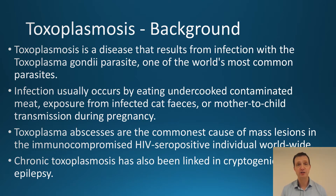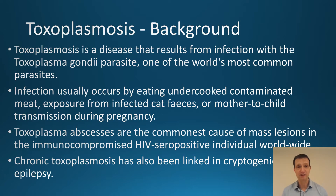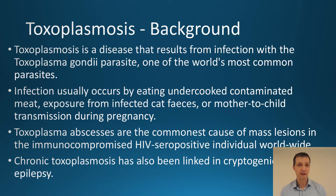The infection usually comes about because people have eaten undercooked or contaminated meat, through exposure to infected cat feces, and also via mother-to-child transmission during pregnancy. In the immunosuppressed — and the most common group are people who have HIV — Toxoplasma abscesses are the commonest cause of mass lesions worldwide in the immunosuppressed HIV population.